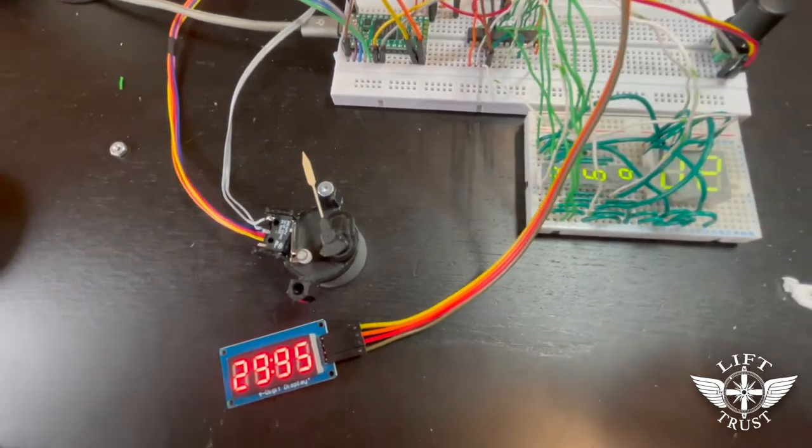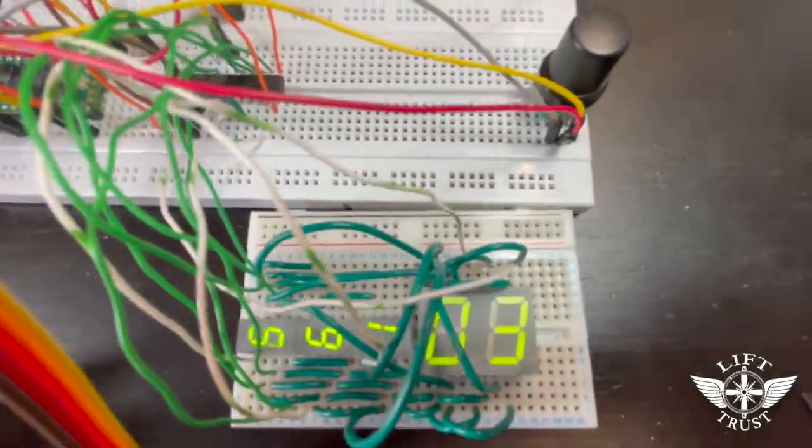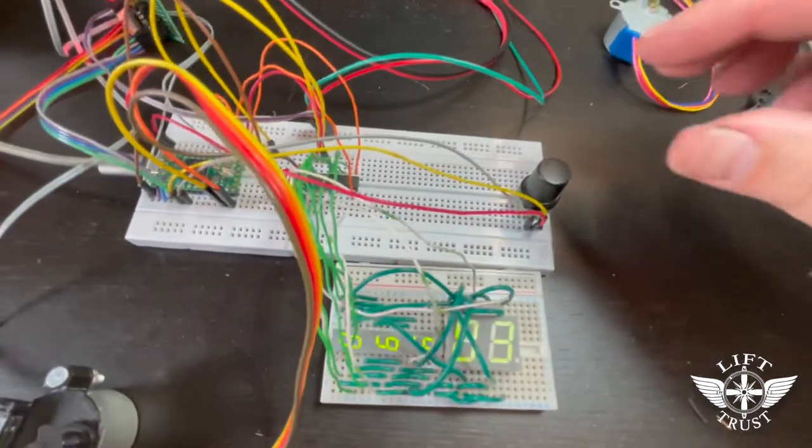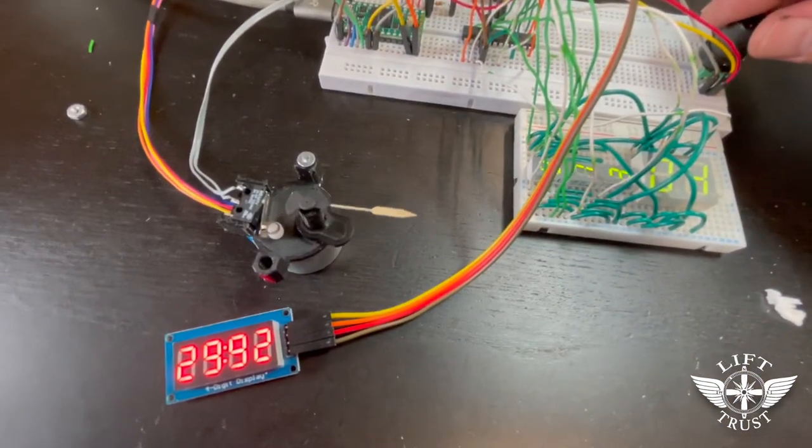But anyway you get the idea, so the electronics are all set. The barometric pressure is set and I can set it during flight if I wanted to. So 4000, so working.